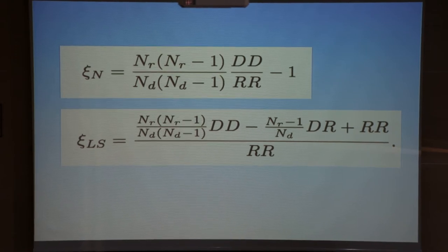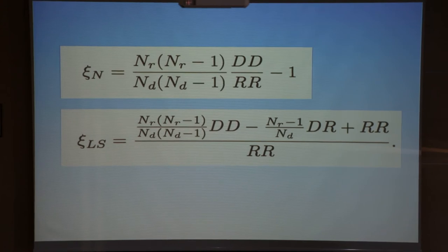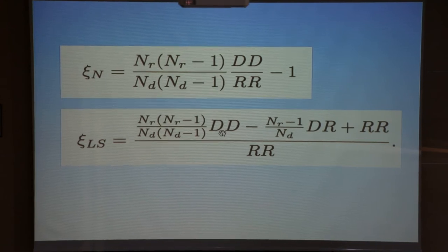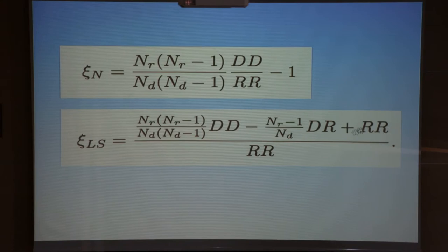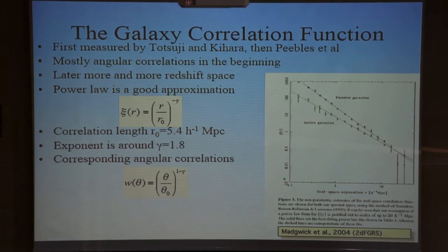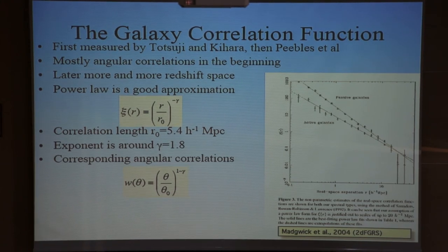A more sophisticated estimator is the Landy-Szalay, which is essentially the same but introduces the combined number of pairs between data and random. This can be shown to be quite stable with less variance, and is probably now the standard that people use. You have to count three quantities - three histograms: the number of pairs in the random catalog at a given distance, the number of pairs in the data catalog at a given distance, and the cross-pairs between data and random, normalized by the number of points in each catalog.